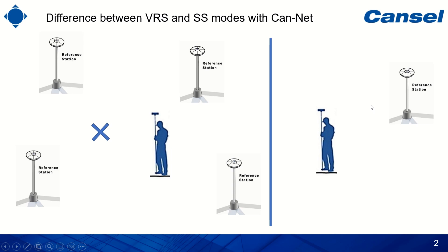If you have just one base station around you from CANNET, then the SS mode will be your only option. A general workflow would be to start with VRS mode, and if you don't get your desired accuracy or it doesn't work at all, you can switch to SS mode. Another way to determine which mode to use is through the CANNET website.